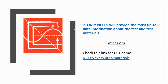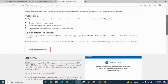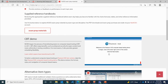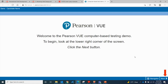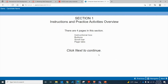The seventh point is that only NCEES will provide the most up-to-date information about the test and test materials, so always go to NCEES.org. There is a CBT demo showing the different types of questions that may appear in the exam and how your computer screen will look during the exam. Go to NCEES.org, then Exams, then Exam Preparation Materials — in the third section there is a CBT demo. Click on it and it will take you to the test format, where you can go through and become familiar with it.